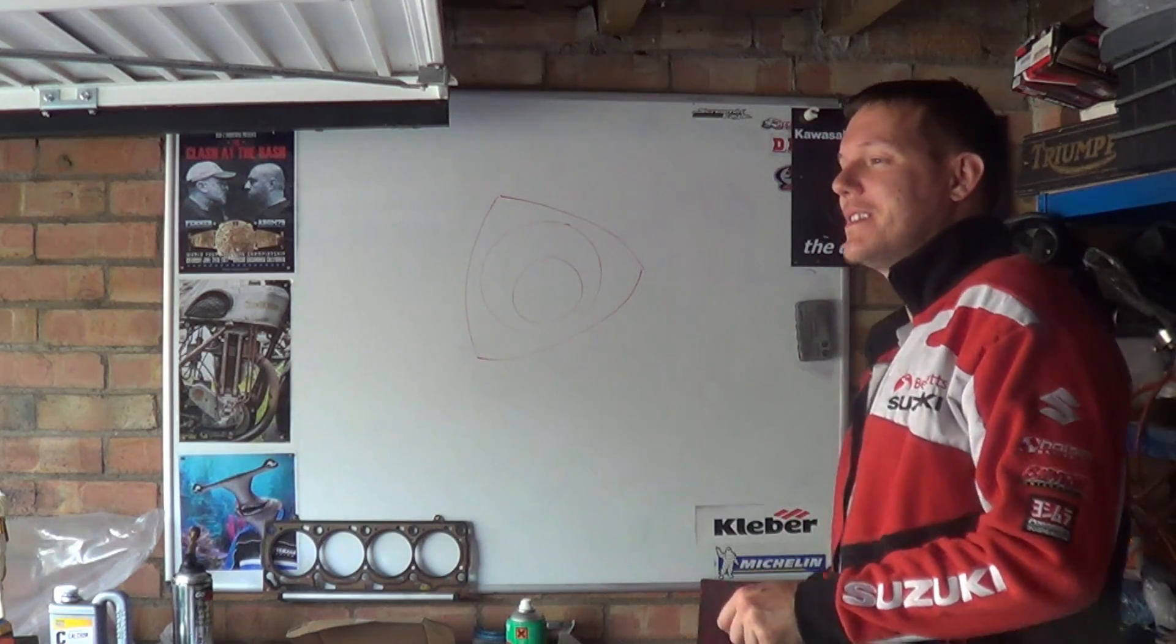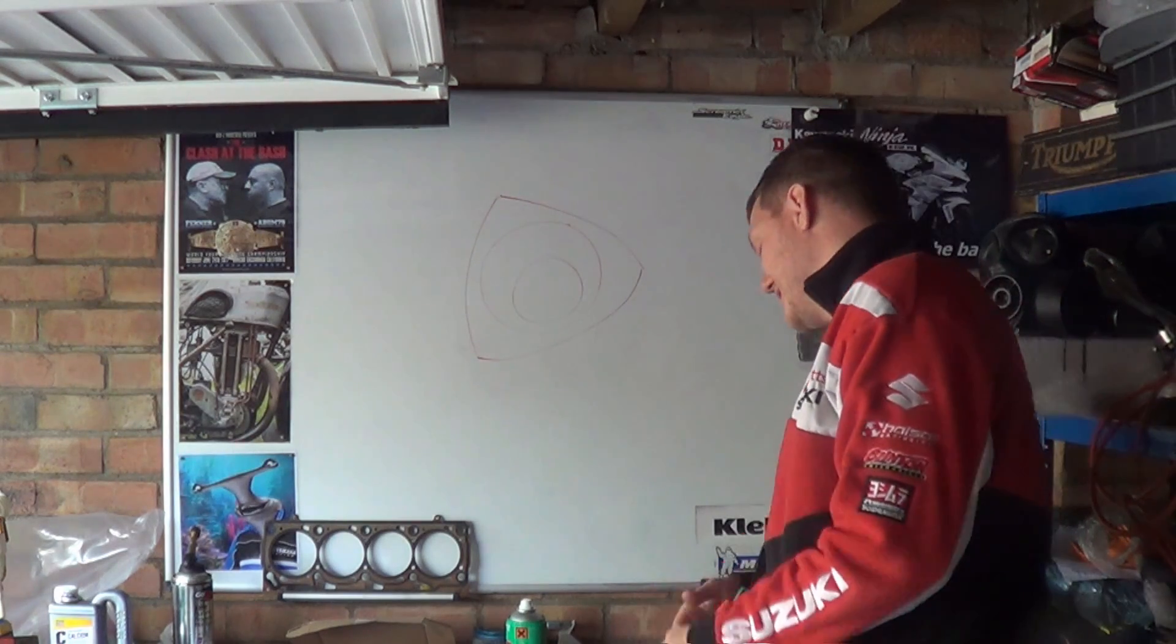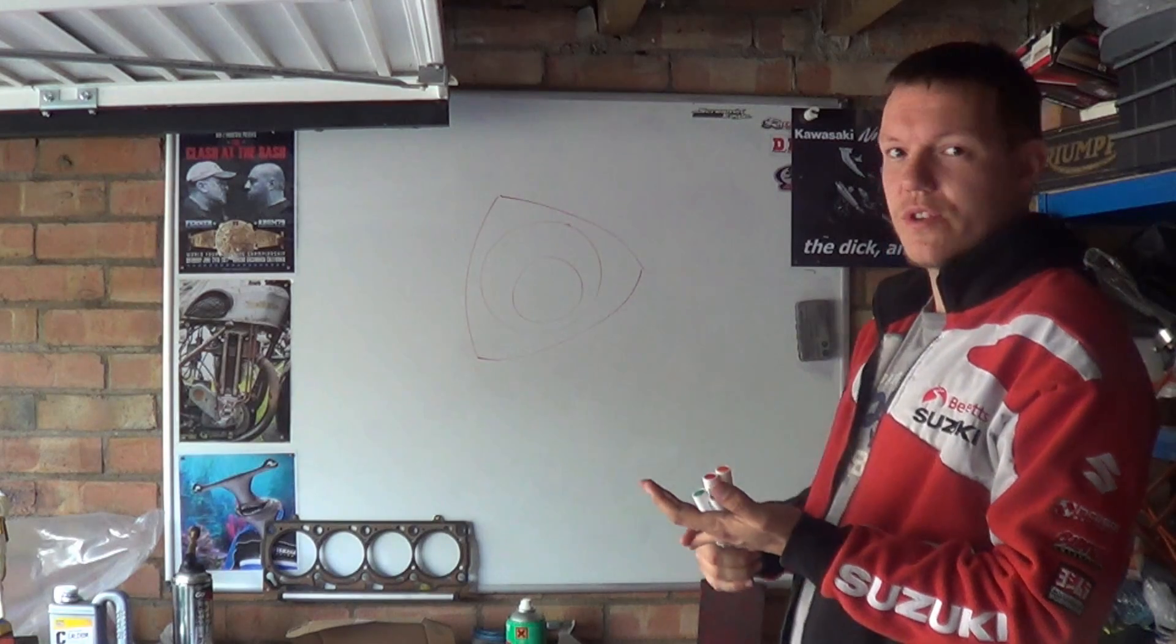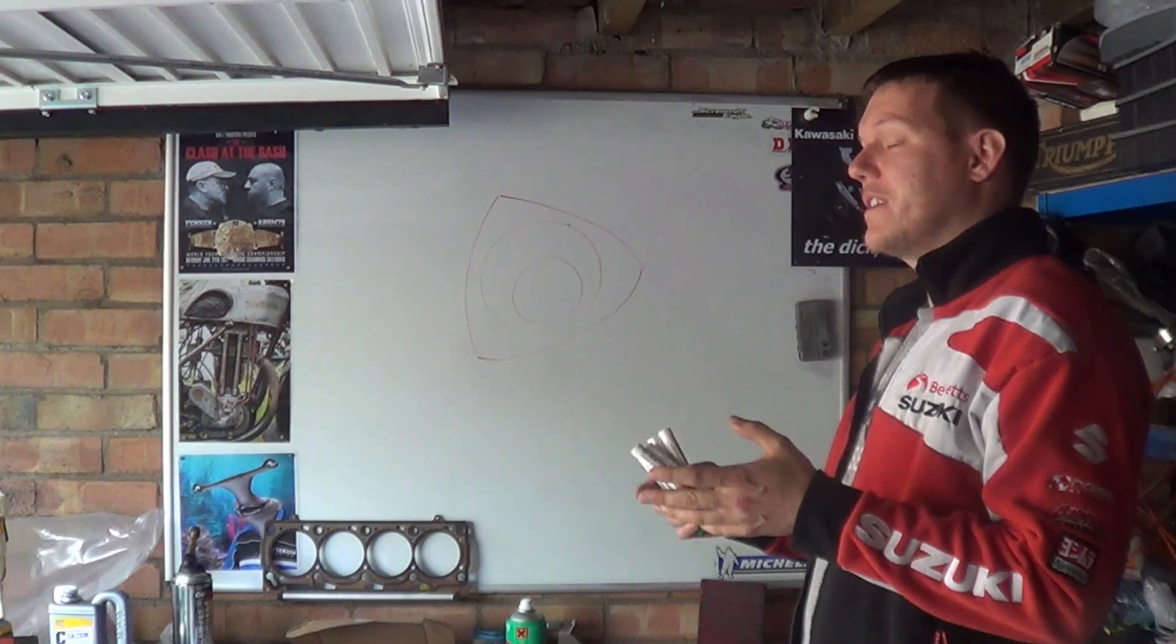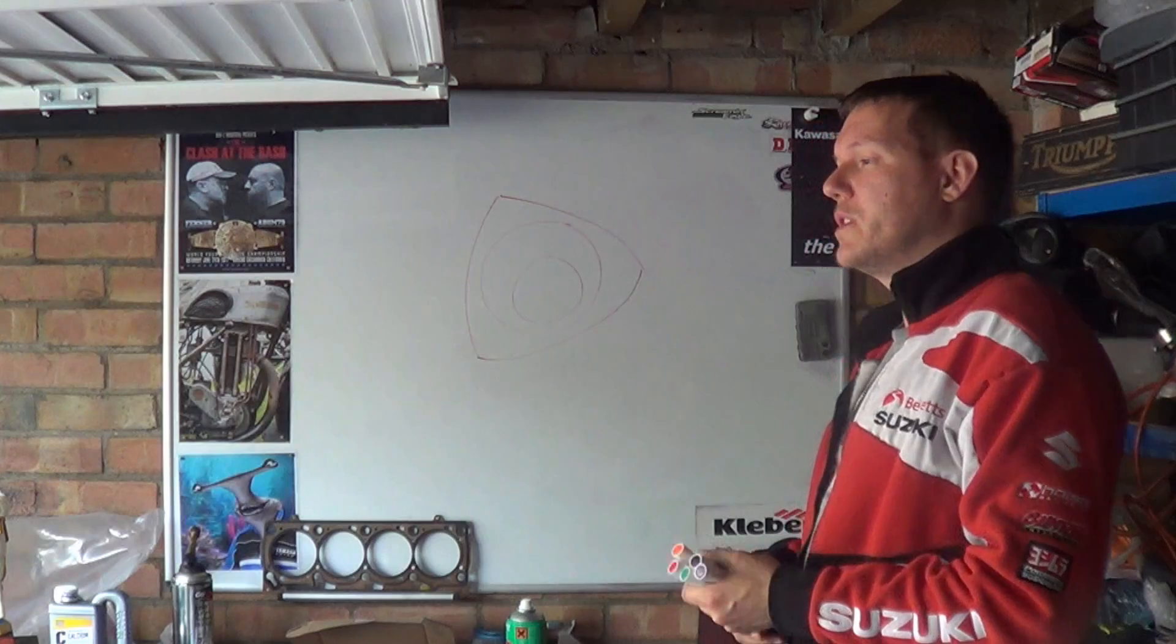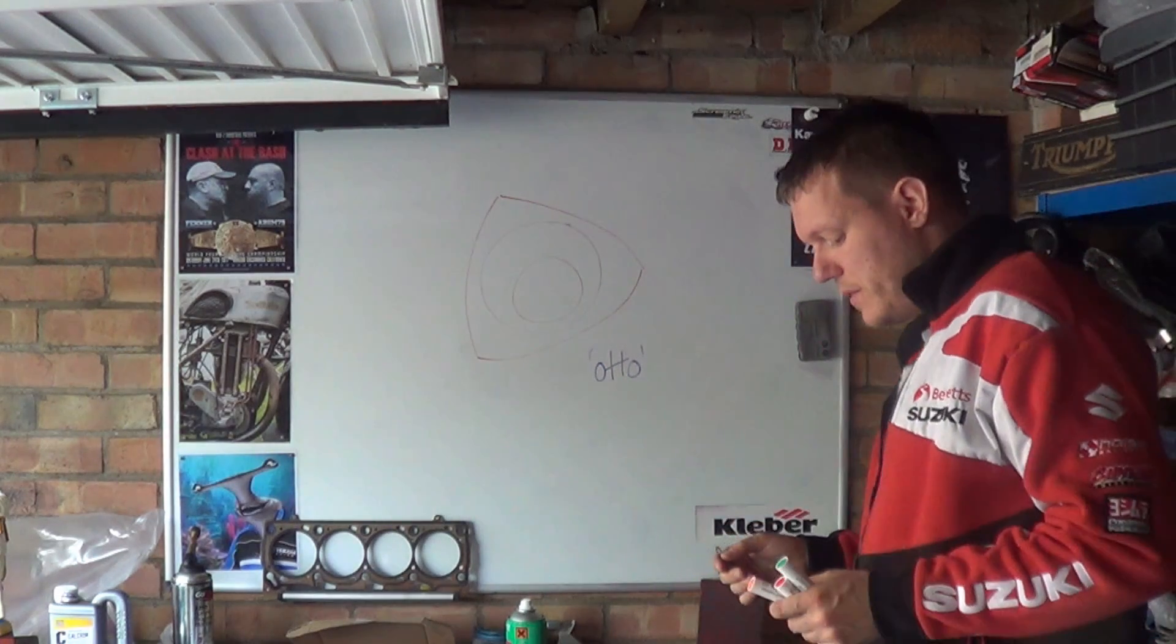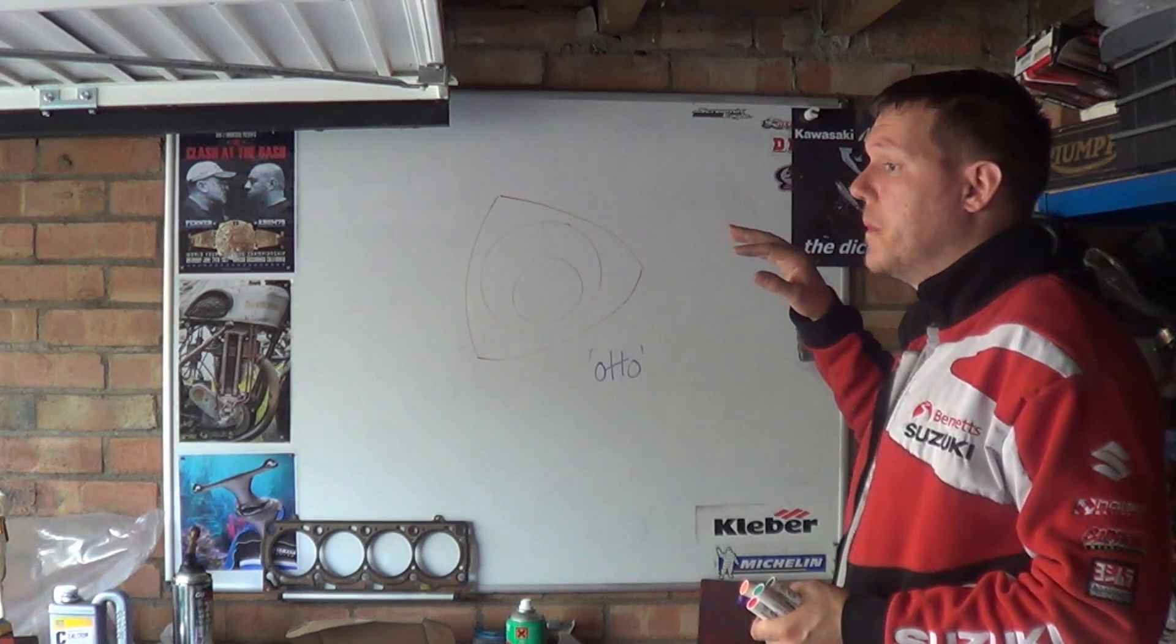People say quite a lot that Wankels are two-strokes. No. Wankels are not two-strokes. They do not run on a two-stroke cycle. They have induction, compression, ignition and exhaust. The fact that these are not divided into strokes means that it's not as obvious to see, but it uses the Otto cycle, which I'll do a video about when we do PV diagrams and all the rest of it. But it's not a diesel cycle. It's the Otto cycle. They're not two-strokes.